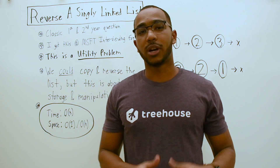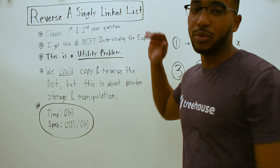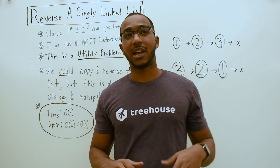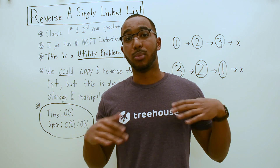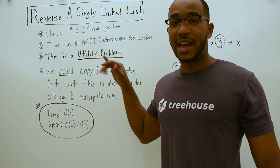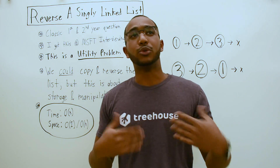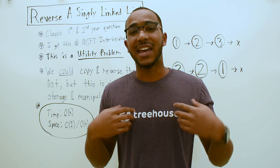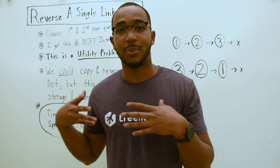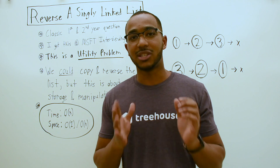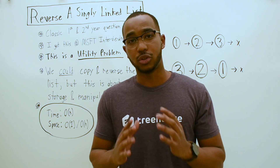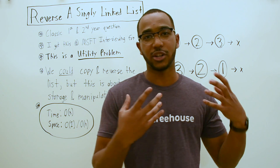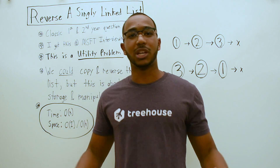All right, so today we're going to talk about how to reverse a singly linked list. This is a classic first and second year college student programming question, and this is what I call a utility problem. Utility problems are coding interview questions where they don't really require you to think of a new algorithm or think of something in a special way. They are questions to see whether you know how to do something — whether you know how to manipulate a data structure a certain way, whether you know how to search it a certain way. It's basically a utility question.